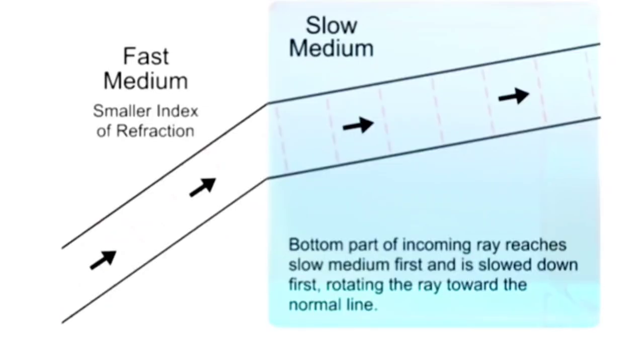To better visualize this phenomenon, let's look at this diagram. As a beam of light reaches the surface of a medium, the lower portion enters first and is slowed down.